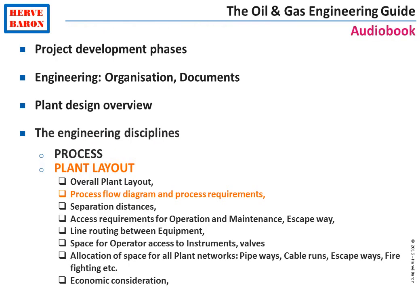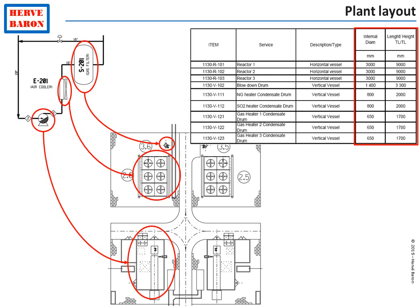Once the overall facility layout has been established, plant layout will define the unit layout, which is primarily done according to process requirements. The position of equipment is determined according to their sequence on the process flow diagrams. The size of vessels is given by process in the equipment list showing dimensions from process sizing. However, rotating equipment, heat exchangers and other equipment types are not sized by process — inquiries to vendors are necessary to obtain their dimensions.